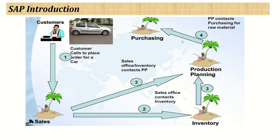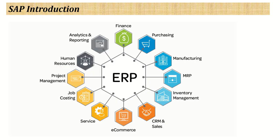This all works in an integrated way — even if departments are working from different locations, because they are using ERP software which uses a centralized database. This means if the sales department places an order from any location, the inventory can be checked, production planning can be run, and raw material purchasing can be done. We can see that in an organization with different departments — purchasing, finance, human resource, service, CRM — they all use a centralized database system.